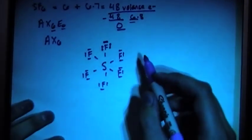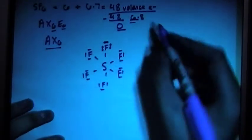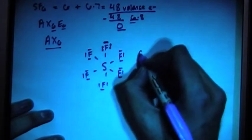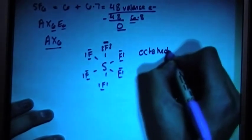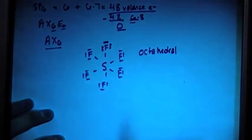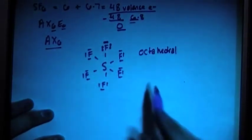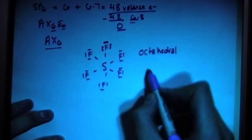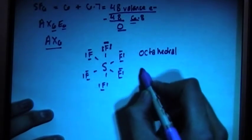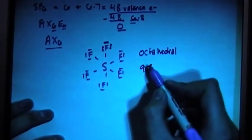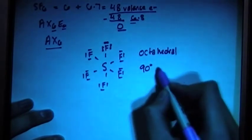And based on the shape AX6, this is going to be an octahedral molecule. And with this shape, the bond angles are going to be 90 degrees and 180 degrees.